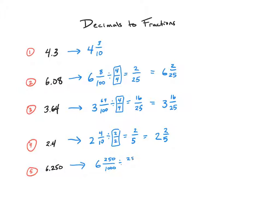Matter of fact, I can pull out a two-hundred-and-fifty from it. Two-hundred-and-fifty goes into itself and into one-thousand. It goes into itself once and into a thousand four times. So, six and two-hundred-fifty thousandths is the same thing as six and one-fourth.